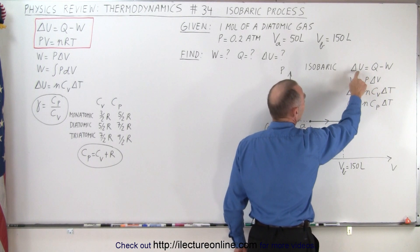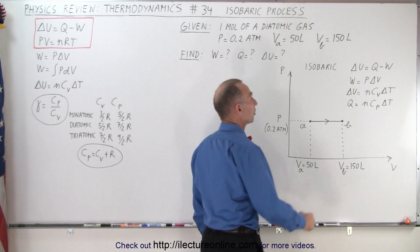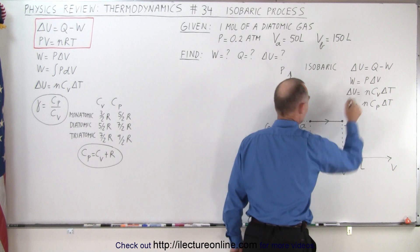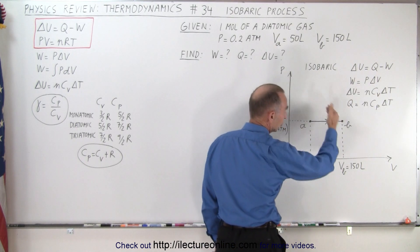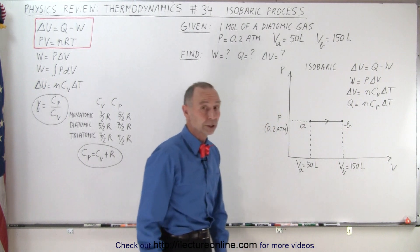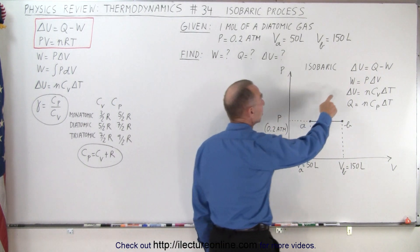In this case, none of the three components of that equation are zero, so they are what they are. The work done is going to be the pressure times the change in the volume. Since we're given the pressure and we know what the change of the volume is, we can easily calculate the work done.